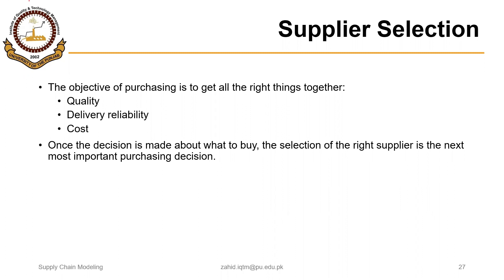You could notice that we are mentioning cost here, not price. We will discuss the concept of total cost of ownership in the next lecture. Once the decision is made about what to buy, the selection of the right supplier is the next most important purchasing decision.